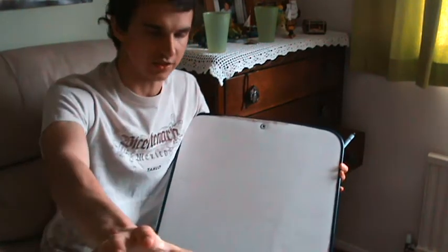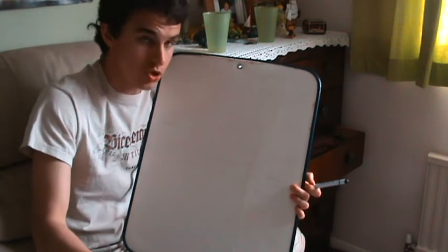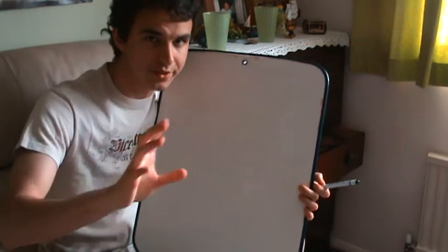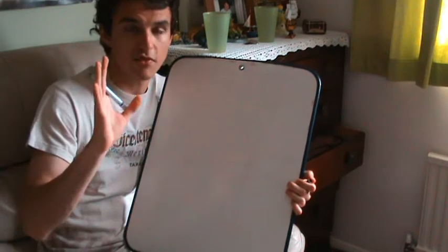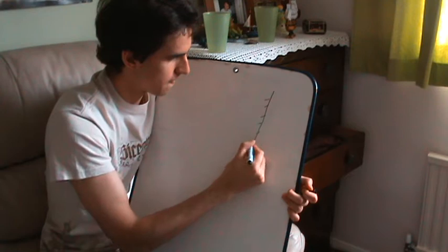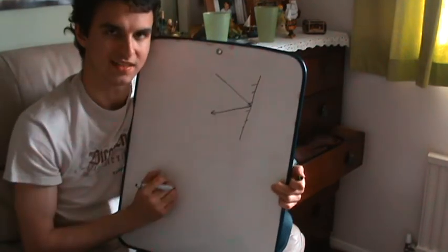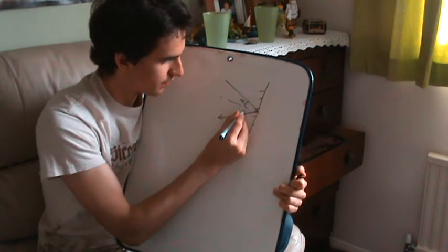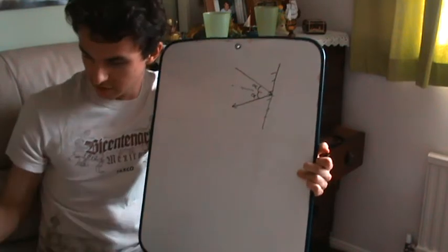We're going to start off with Newton — we always start off with Newton — and we're going to be talking about light. Newton thought that light behaved as a particle. He thought that light had mass and was composed of little particles which he called corpuscles. This was Newton's corpuscular theory of light, and he used it to explain phenomena such as reflection and refraction. Using his laws of motion and conservation of momentum, he explained why light bounces off at exactly the same angle to the normal as it hits.